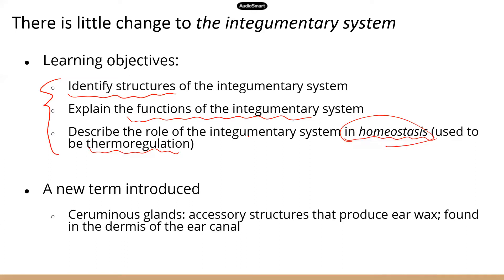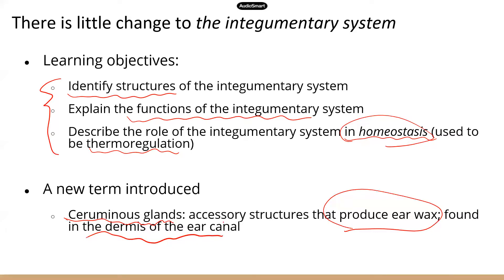All right, now I did notice that they introduced a new term in TEAS 7, which is over here. So it's a gland called ceruminous gland. So these glands are accessory structures that produce ear wax, and they are found in the dermis of the ear canal. So this is a new structure that was not in TEAS 6 study manual. So I want to point out in case you see questions that have this term so you know what these glands are. Basically, they produce ear wax.